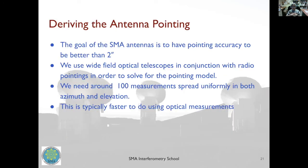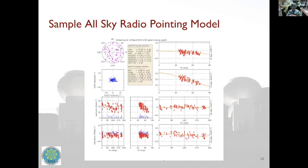The goal for SMA antennas is a pointing accuracy better than 12 arcseconds. There are two approaches: the traditional method uses a small optical telescope mounted through a hole in the primary dish, looking at stars and using offsets from their known positions to determine pointing model parameters. We can also use radio interferometric measurements of radio sources to build an all-sky radio pointing model. With this approach the RMS is now about a couple of arcseconds in both azimuth and elevation.